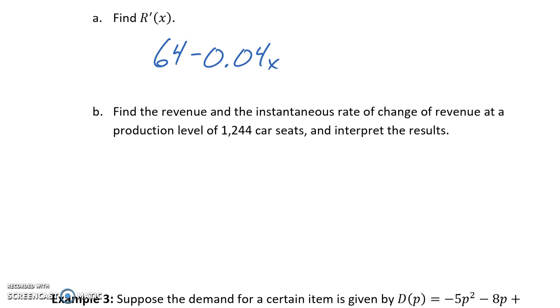So when we're told to find the revenue, that means we want to go back to the original revenue function and evaluate it at a production level of 1,244.